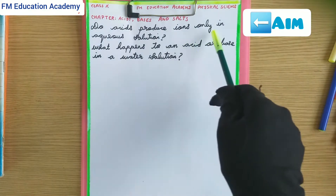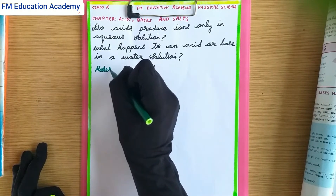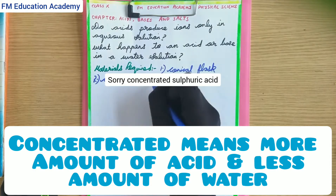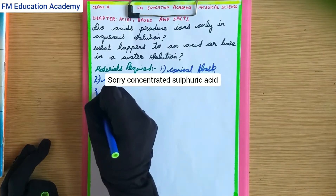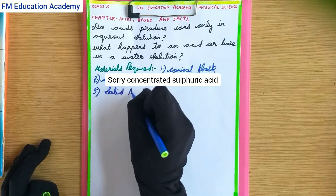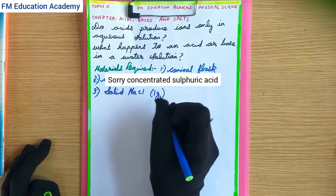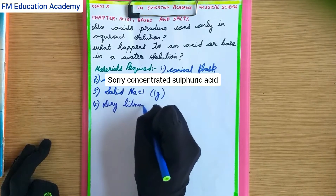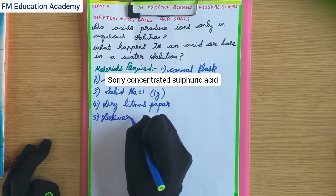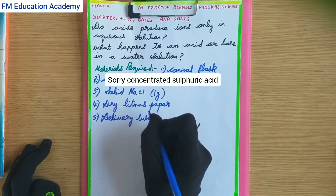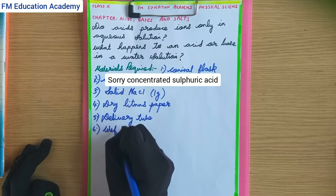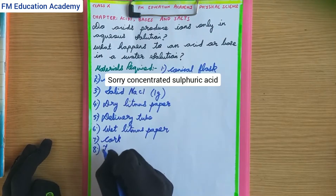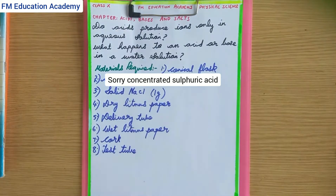The materials required are: a conical flask, concentrated HCl solution (concentrated means more amount of acid and less amount of water), solid sodium chloride, a dry litmus paper, a delivery tube, a wet litmus paper, a cork, and a test tube.